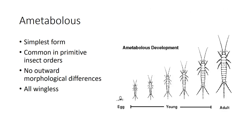Ametabolous is the simplest form. There are only sexual and size differences between the immatures and adults. It is common in primitive insect orders such as Zygentoma. The immatures hatch from eggs as a small version of the adults. There are no outward morphological differences and all of these insects are wingless.